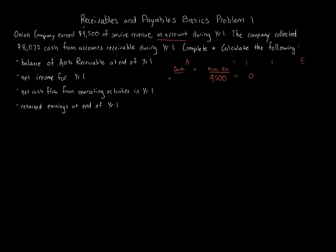No liabilities are affected — we don't owe anything to anybody, so that's zero. On the equity side, for a corporation we have common stock and retained earnings. Remember WIRE — W-I-R-E — investments go under common stock, but the W (withdrawals), R (revenue), and E (expenses) go under retained earnings. Retained earnings increases by $9,500 because we're recording revenue of $9,500, which positively increases retained earnings. The accounting equation balances: $9,500 equals $9,500.